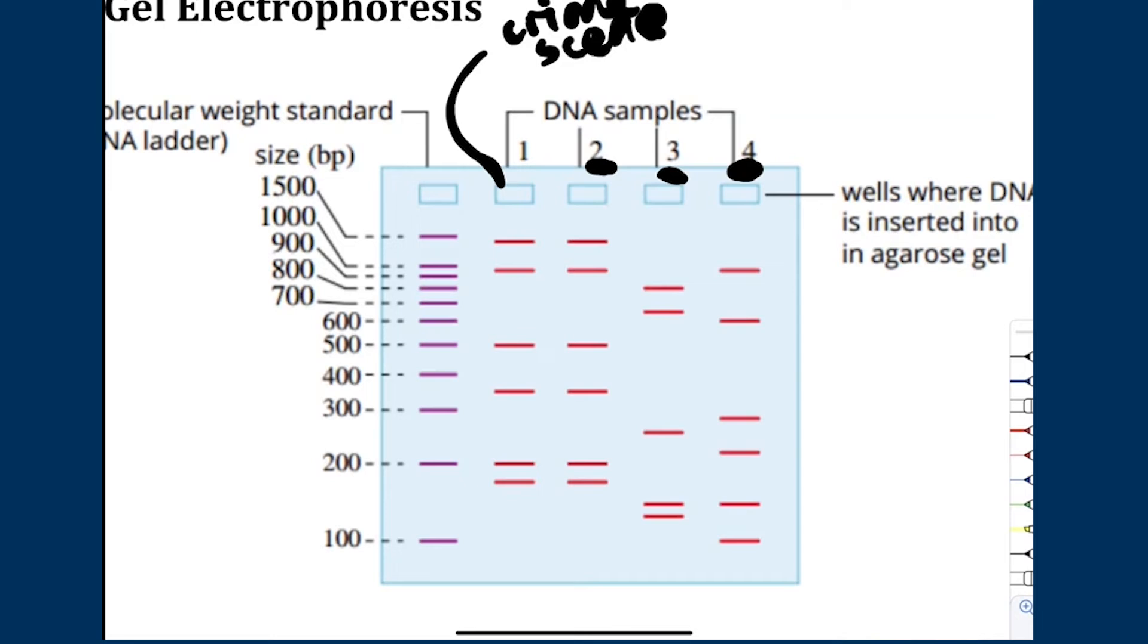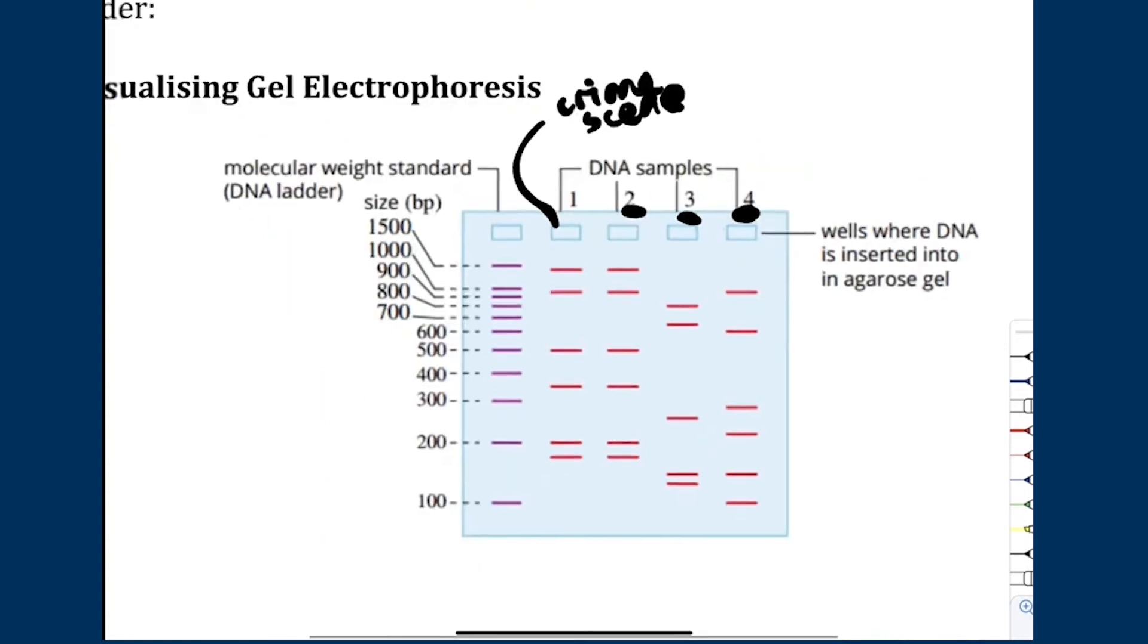So what you just saw here, everyone, is DNA profiling. It consists of two steps. What are the two steps? PCR and electrophoresis. And DNA profiling is also known as DNA fingerprint analysis. Does that make sense? Very good.